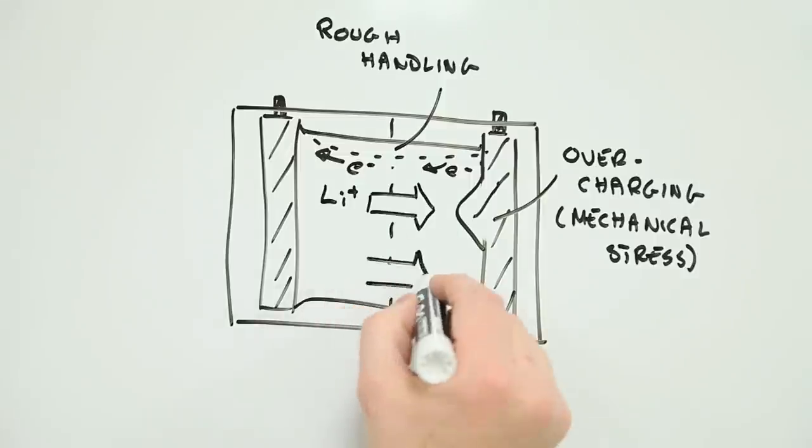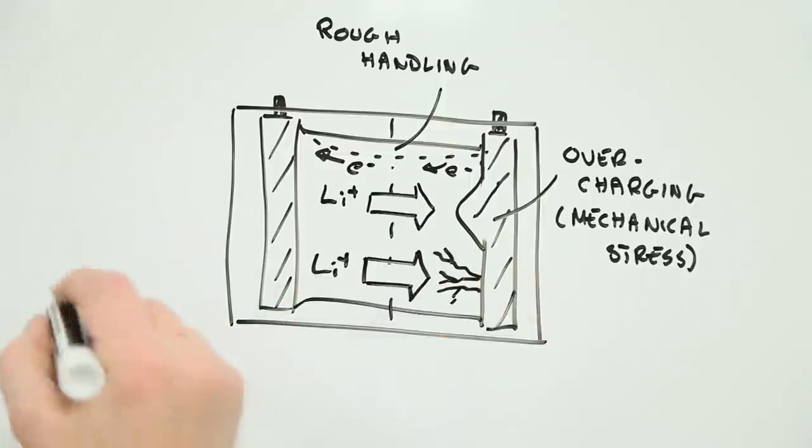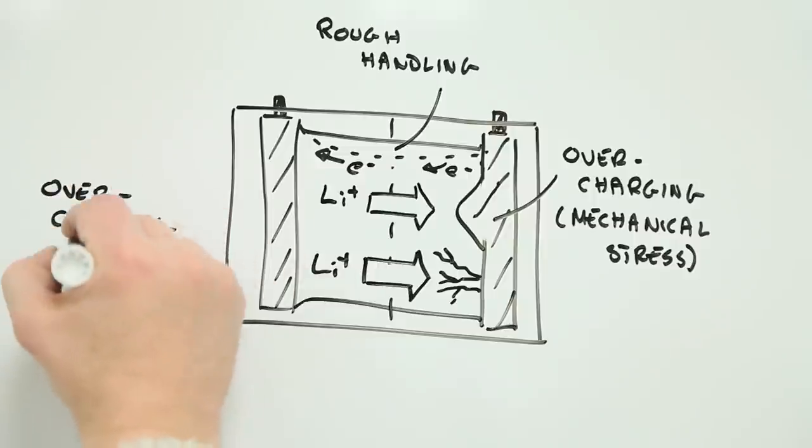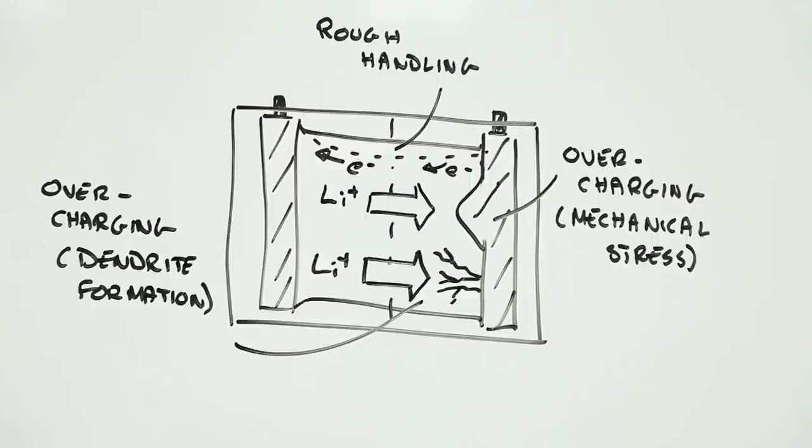Overcharging can also lead in some cases to electron conducting metallic deposits between the electrodes. Good news for electrons, not so good for anyone using the battery.